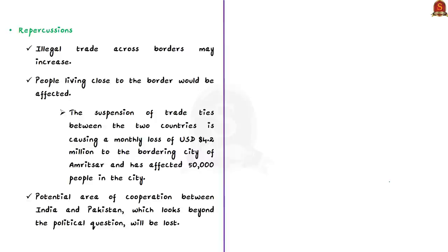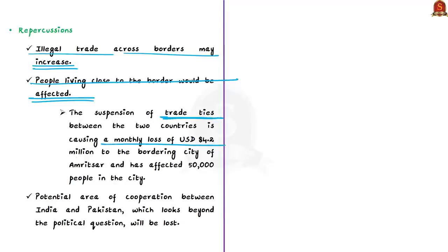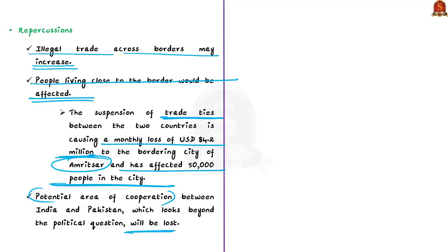Expected repercussions of no trade include increased illegal trade, as prices are high in Pakistan and low in India, making it fertile ground for smuggling essentials like sugar. People living close to the border would suffer most. The suspension of trade is estimated to cause a monthly loss of 4.2 million US dollars to the bordering city of Amritsar, affecting 50,000 people there.